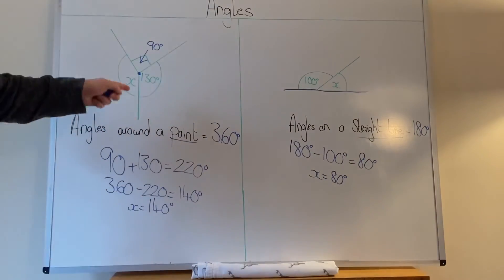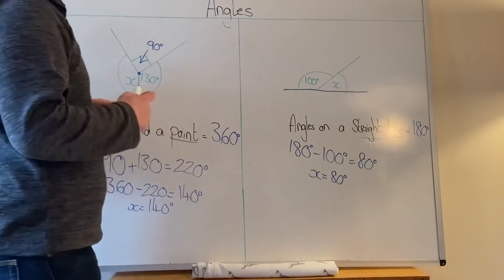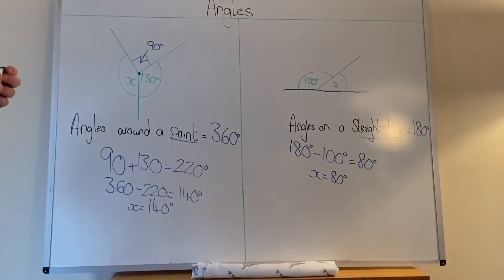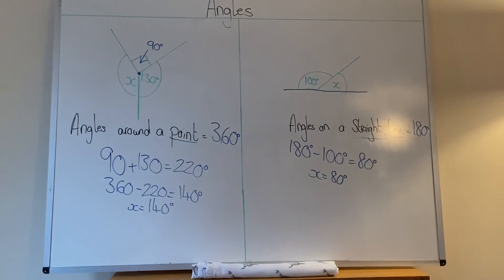Things you need to know. Angles around the point add up to 360. Angles on a straight line add up to 180 degrees. I'm going to give you a worksheet to go along with this as well. So make sure you answer the questions, please. If you've got anything you need to ask, by all means, email me. Otherwise, have a good day, guys.